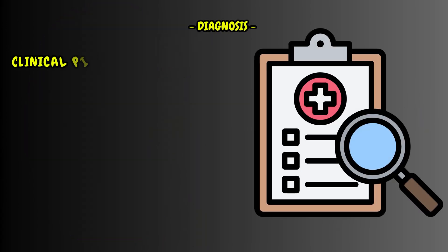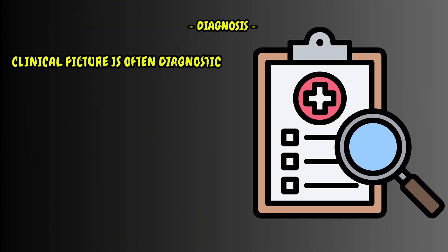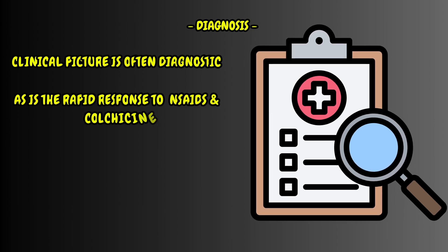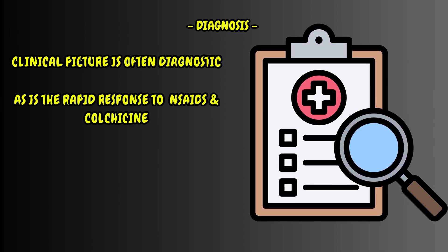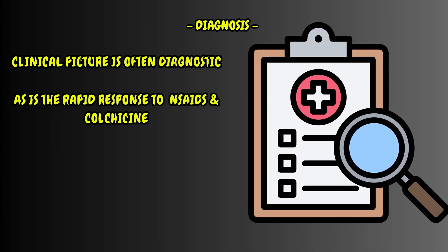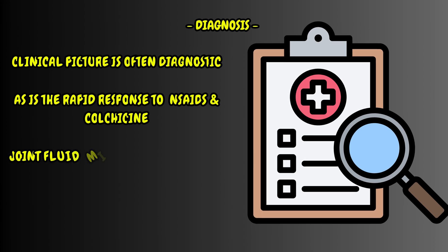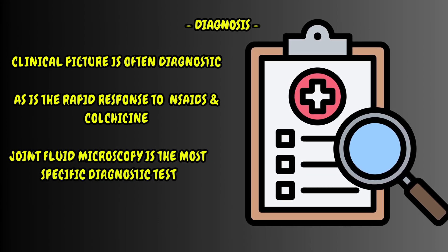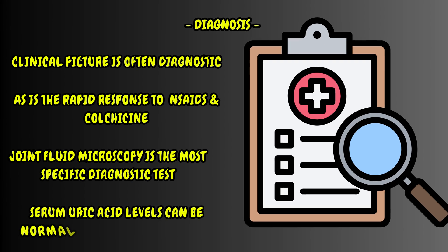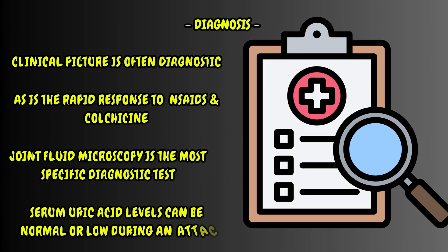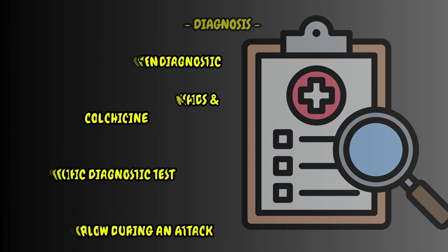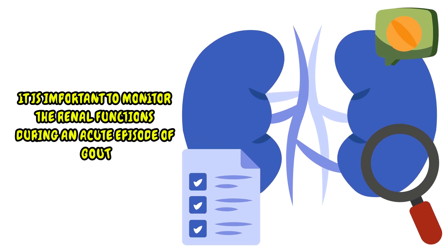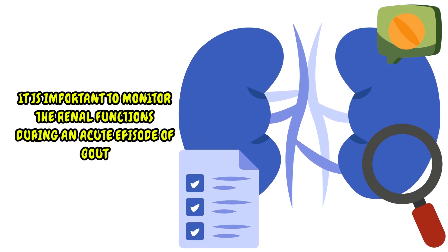Clinical picture is often diagnostic in gout, as is the rapid response to non-steroidal anti-inflammatory drugs and colchicine. However, joint fluid microscopy is the most specific diagnostic test. Serum uric acid levels can be normal or low during an attack. In addition, it is important to monitor renal functions during an acute episode of gout.